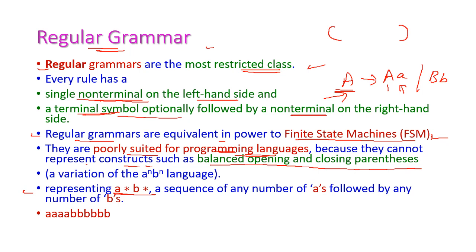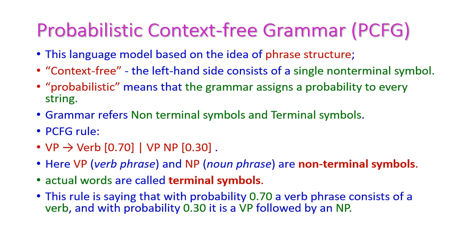Regular grammar can represent a-star b-star — that is, any number of a's followed by any number of b's. For example, 4 a's followed by 6 b's. So regular grammar is not suited for programming languages, but it is very well suited for natural language.